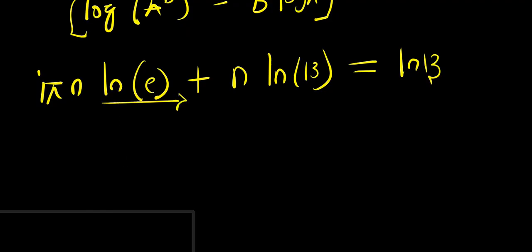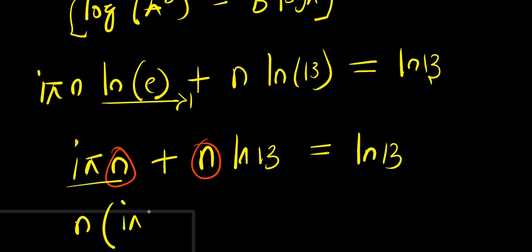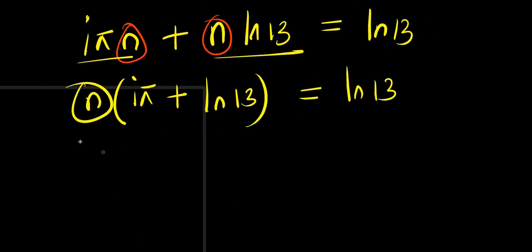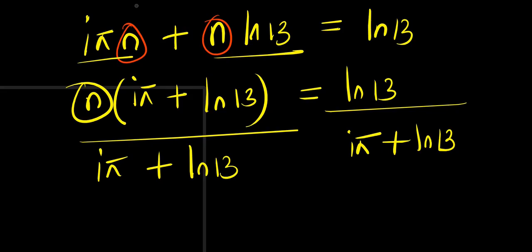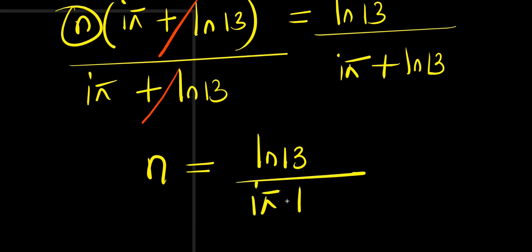Now natural log of e is 1, so we have i times pi times n plus n times natural log of 13 equals natural log of 13. We can factor out n — we have it in both terms — so we have n times i pi plus natural log of 13 equals natural log of 13. To isolate n, we divide both sides by i times pi plus natural log of 13, giving us n equals natural log of 13 divided by i times pi plus natural log of 13.